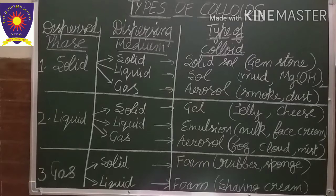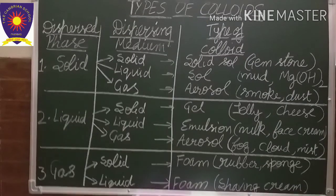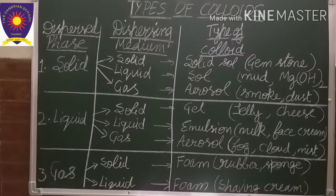Secondly, when a solid is dispersed in a liquid, that is known as a sol. Examples include mud and magnesium hydroxide, which is commonly known as milk of magnesia.